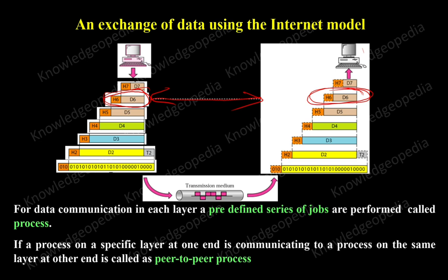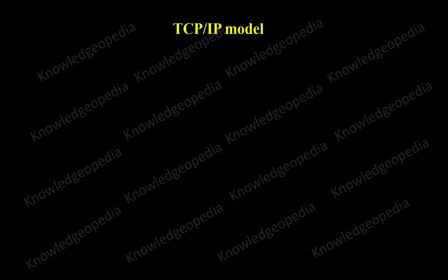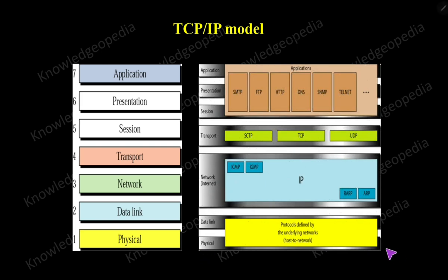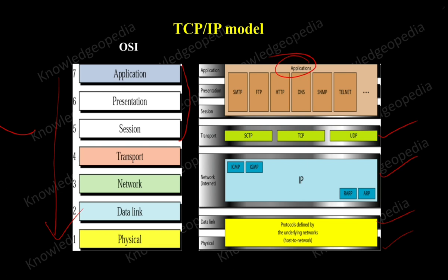We discussed this in relation to the OSI reference model. Now let us see what is the TCP/IP model. The TCP/IP model also performs all these jobs. The only thing is that it combines some of the functionality and gives them a single layer name. In TCP/IP, we have a physical layer, data link layer, network layer, and transport layer. But the three layers — session, presentation, and application — are combined and given the name application layer. So all the functionality done in the OSI reference model is also done in TCP/IP; some functionalities are just combined.